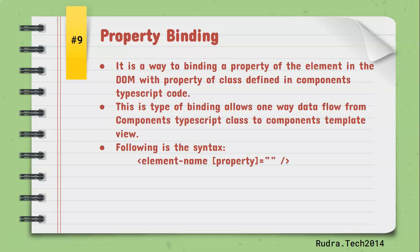When we say DOM, every time we load a particular HTML code into our browser, the browser prepares a Document Object Model. Each element is referred to as an object in the DOM. These elements have certain properties, and these properties can be linked with our TypeScript class properties or fields, which allows us to update these values dynamically.